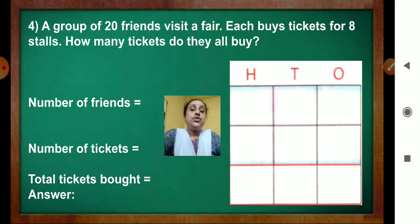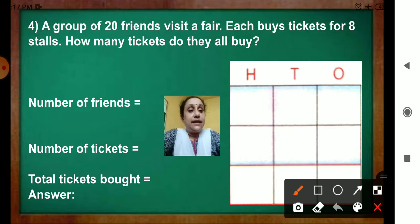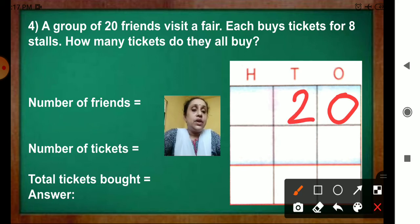Now question 4. A group of 20 friends visit a fair. Each buys tickets for 8 stalls. How many tickets do they all buy? Now find out number of friends. How many friends are there? There are 20 friends. So we will write here 20 number of friends. Now next. Number of tickets, 8.